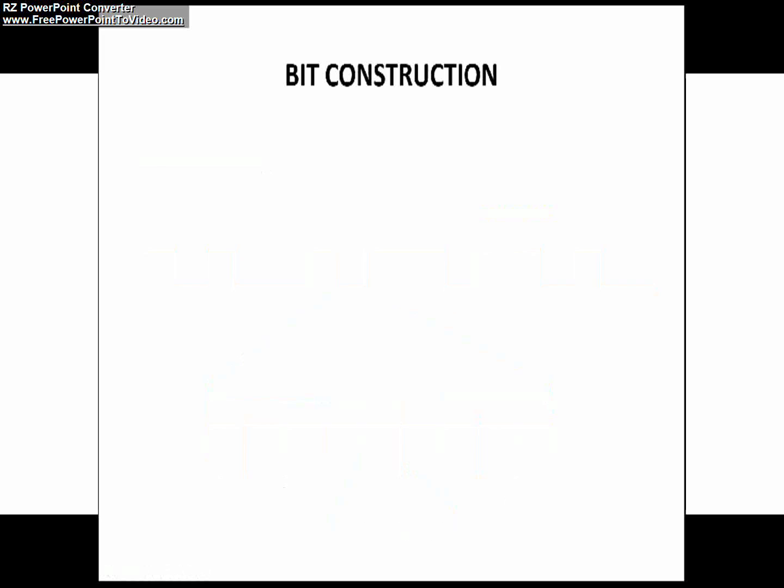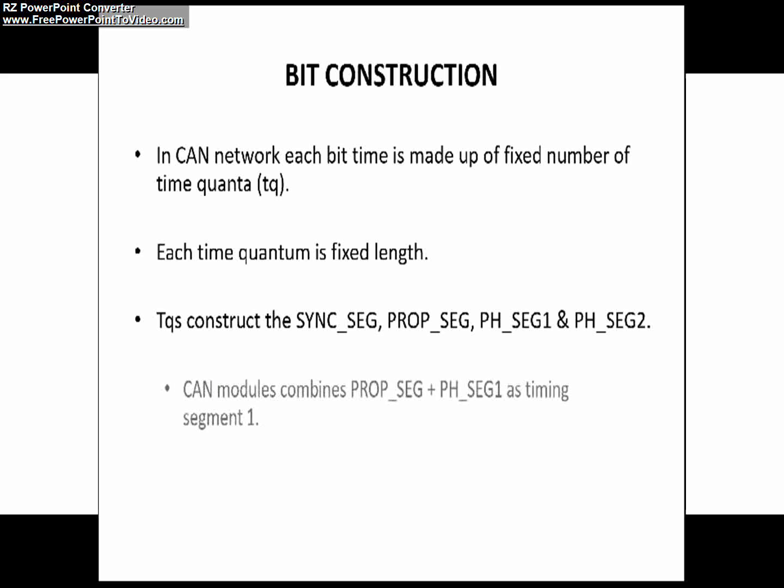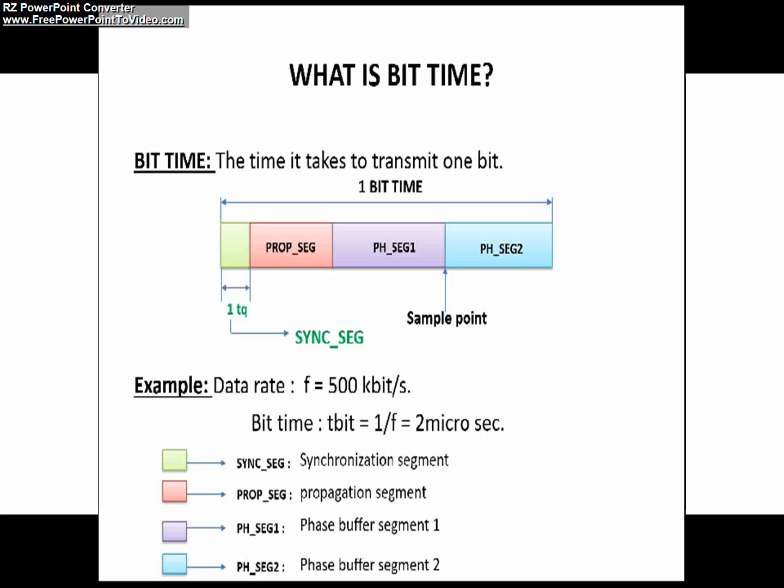As I already said, bit time is the time taken to transmit a single bit. Now we will see: if the CAN is operating at 500 kbps, how much time does it take to transmit a single bit? Let's look at a small example.